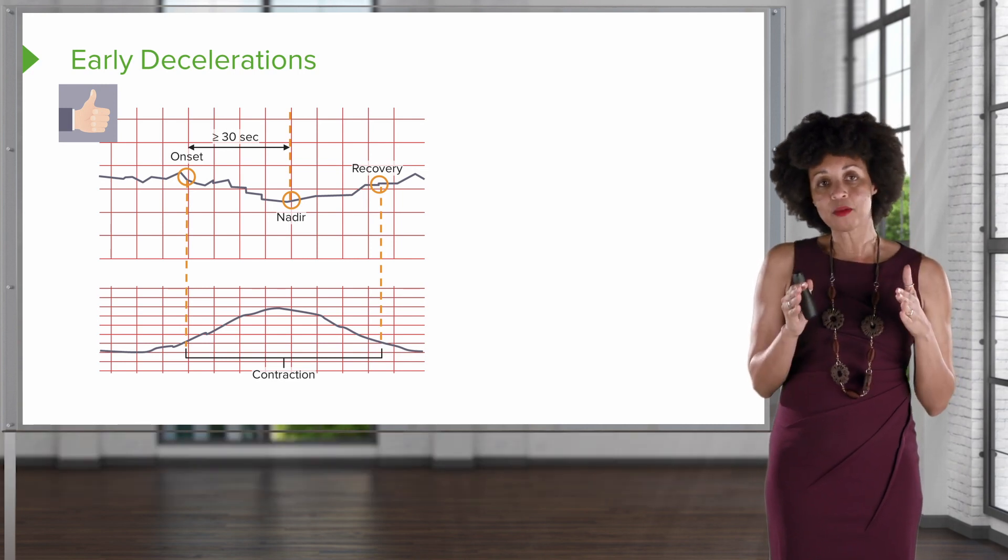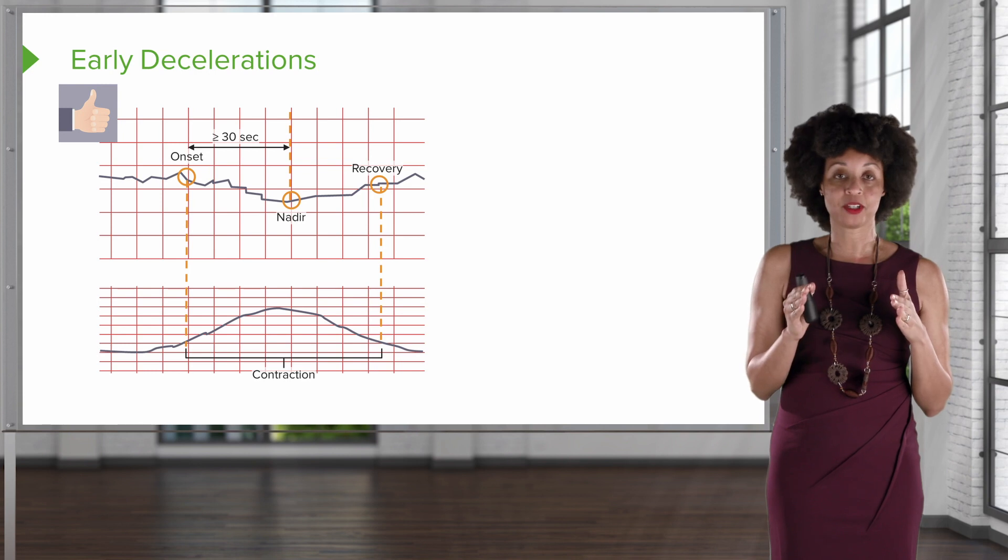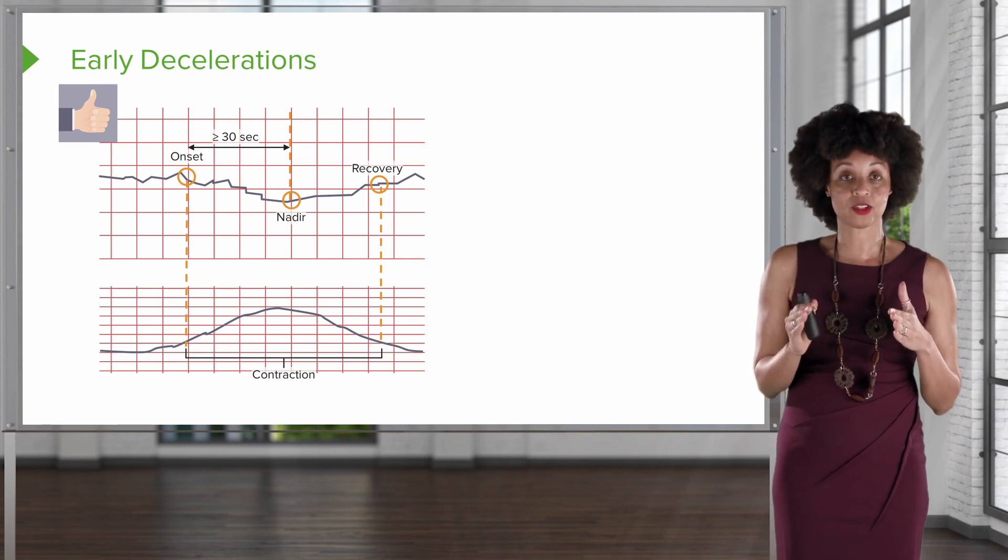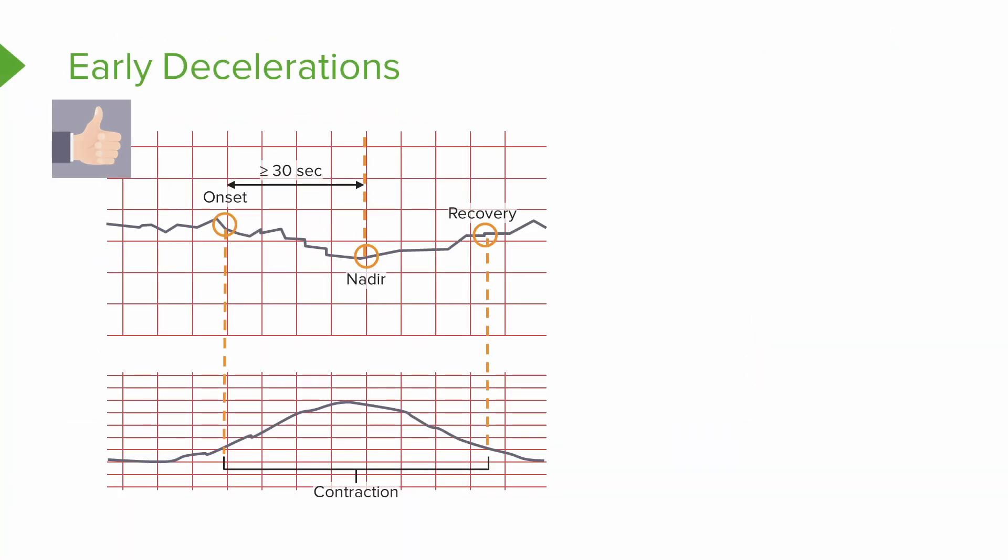We're looking at the fetal monitor, and what we see on the top is the fetal heart rate, and the bottom is the contraction. How would you describe the relationship of the decrease in the fetal heart rate with that contraction? Do you see the onset of both the contraction of the deceleration and the lowest point and the recovery?